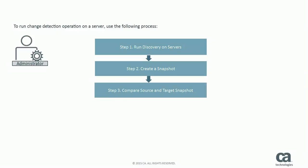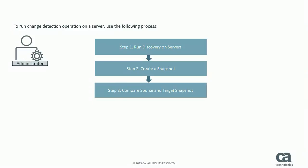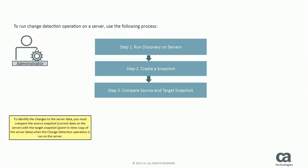Step 3: Compare Source and Target Snapshot. To identify the changes to the server data, you must compare the source snapshot — the current data on the server — with the target snapshot, which is the point-in-time copy of the server data.